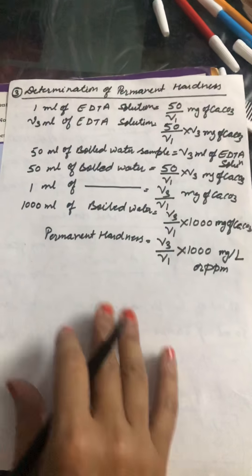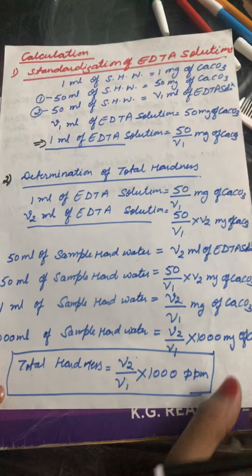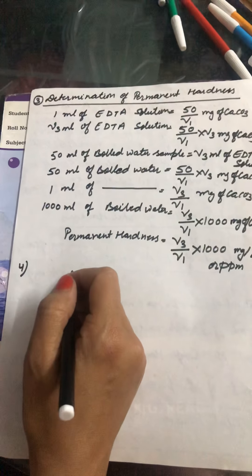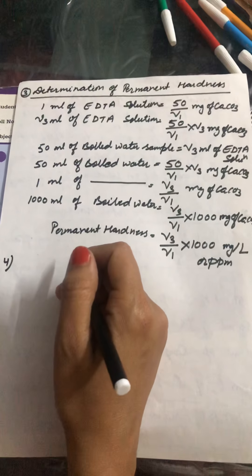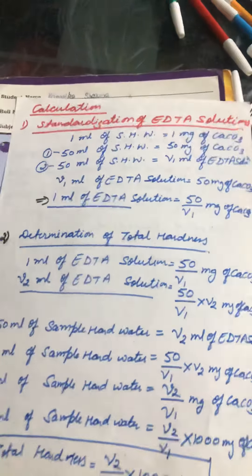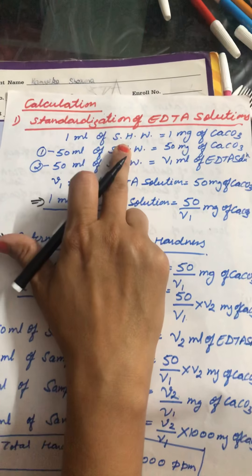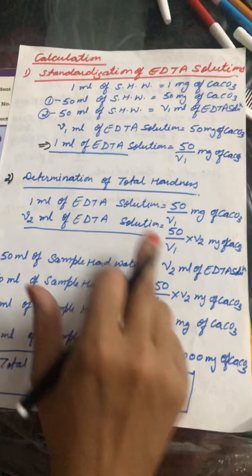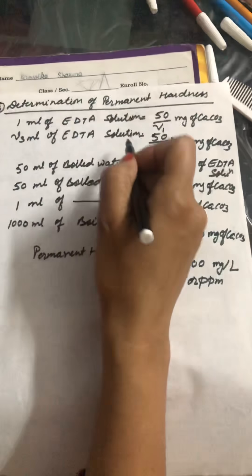We calculated permanent hardness, and before this we calculated total hardness from the sample water. In our titration process we had three titrations: first was standardization of the EDTA solution between standard hard water and EDTA, and second was sample water and EDTA for determination of total hardness.